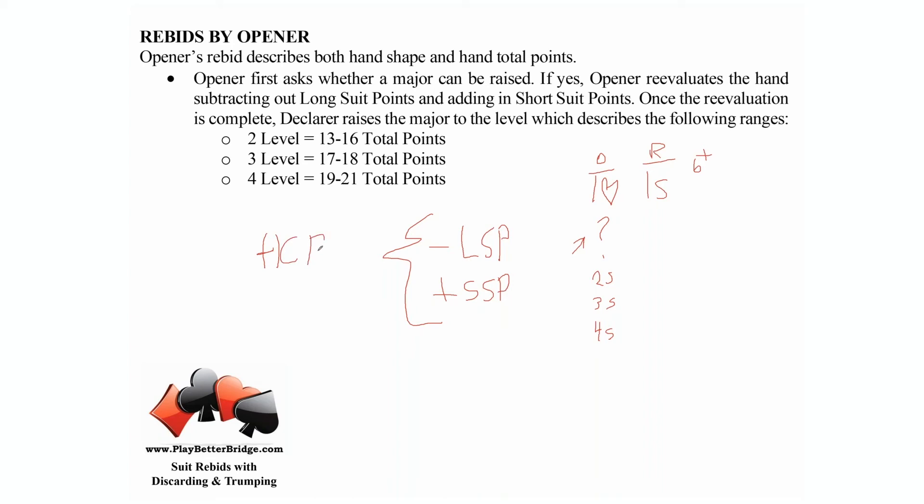You see why it's confusing. But I think the easiest way to tackle this is everybody gets high card points plus long suit points, and the short suit point idea is an exception.